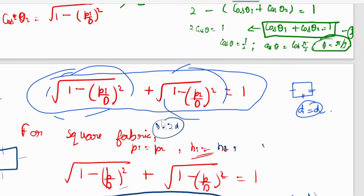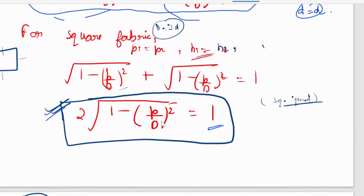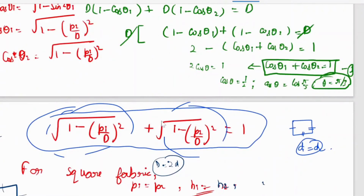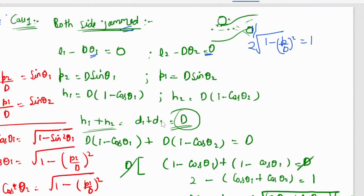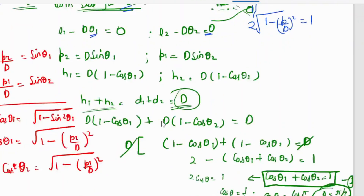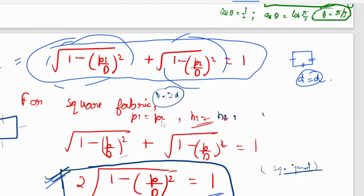For a square jammed fabric — that is, both sides jammed — the formula is 2√(1 - p/d)² = 1. If it is only a jammed fabric with both sides jammed but not square, the formula is 1 - p/d. If it is square, since p1 and p2 are all equal, it becomes 2√(1 - p/d).